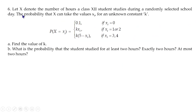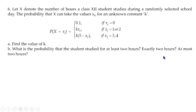Next question: let X denote the number of hours a Class 12 student studies during a randomly selected school day. The probability that X takes values Xi for an unknown constant K is: P(X = Xi) = 0.1 if Xi = 0; K·Xi if Xi = 1 or 2; K·(5 − Xi) if Xi = 3 or 4. Find K, then find P(X ≥ 2), P(X = 2), and P(X ≤ 2).